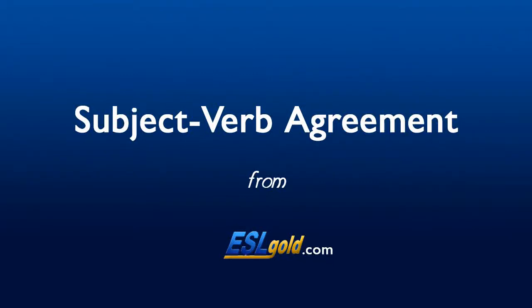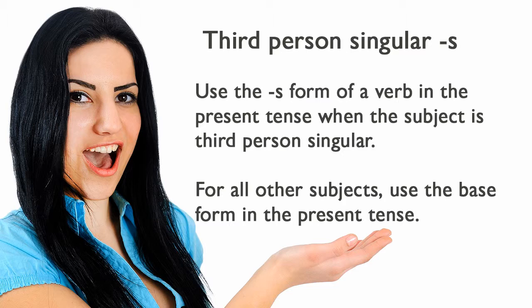Subject-Verb Agreement. Third-person singular with S. Use the S form of a verb in the present tense when the subject is third-person singular. For all other subjects, use the base form in the present tense.